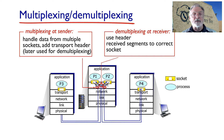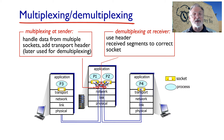To do this, the transport layer header includes a destination port number that identifies the destination application program on the remote machine, and a source port number that identifies the application on the originating machine.